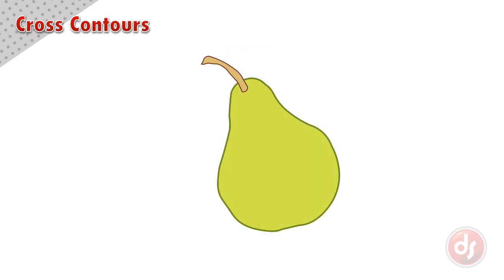When we have an object that has an irregular surface, the cross contours must show that too. To begin, look at the outside edge to help you understand what the cross contour should look like.